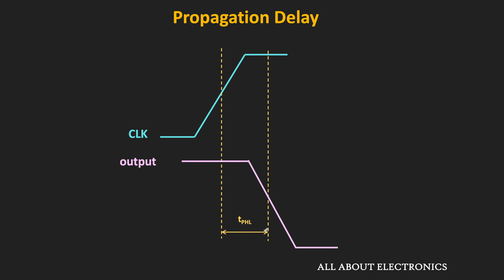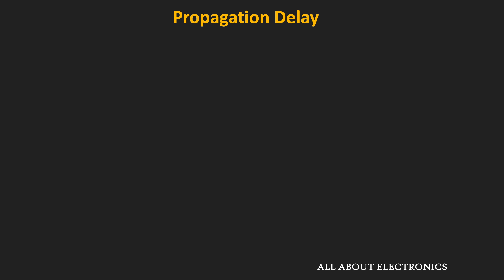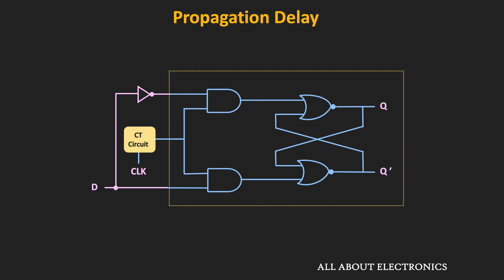Now, why does the flip-flop have this propagation delay? Earlier we have already seen the internal circuit of the flip-flop — internally, every flip-flop is made up of logic gates. Once we apply the input to the flip-flop, it passes through all the logic gates before appearing at the output, and each logic gate also has its own propagation delay. Therefore, once we apply the input to the flip-flop, it appears at the output after a certain delay, and that is why every flip-flop has a certain propagation delay.